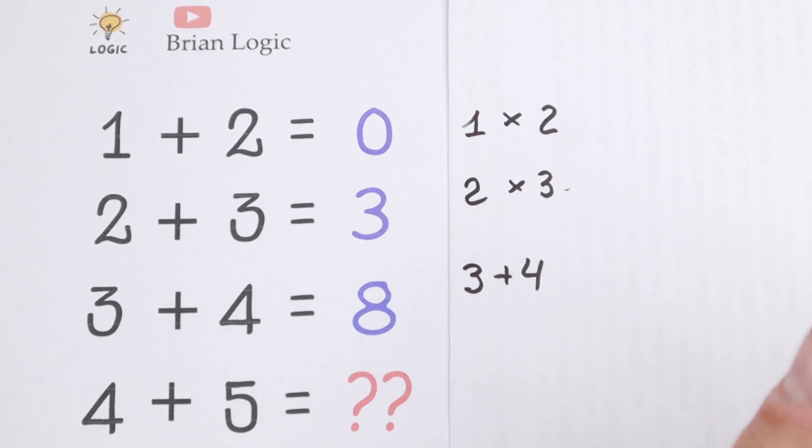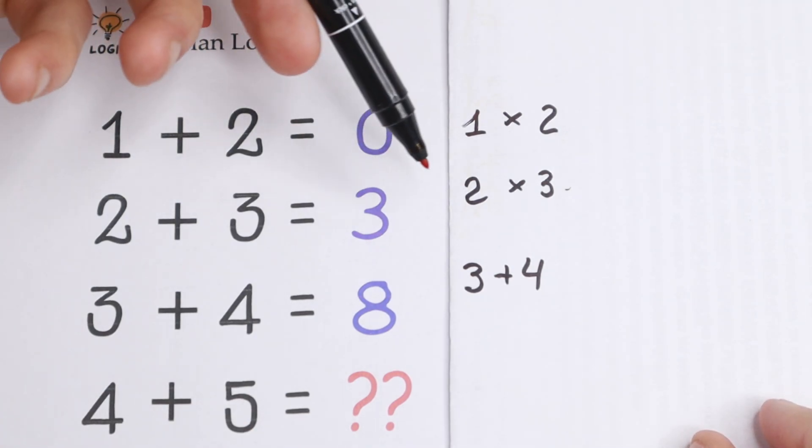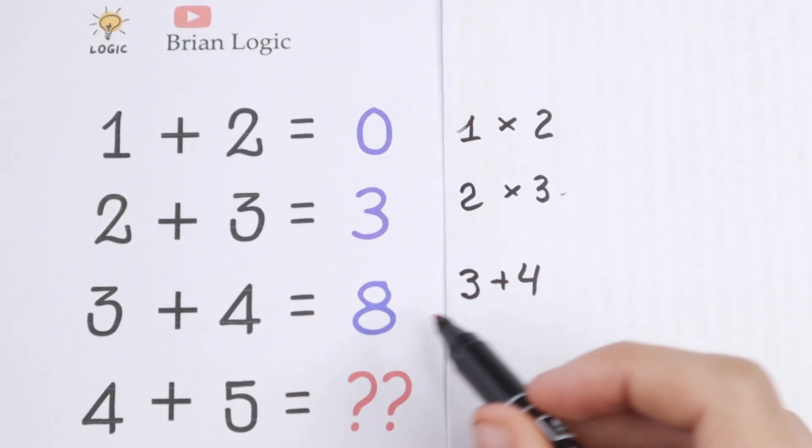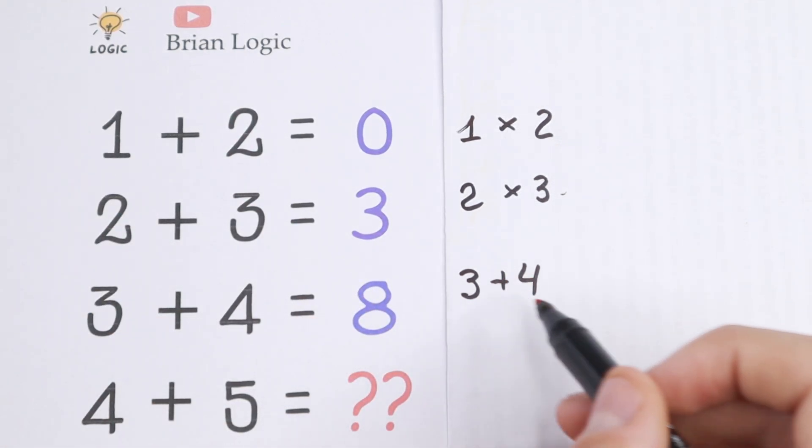And secondly what else here, a really interesting case because this is still not correct, because 1 times 2 is not equal to 0, 2 times 3 not equal to 3, and 3 multiplying by 4 is not equal to 8.